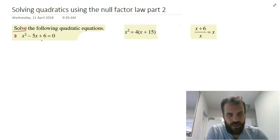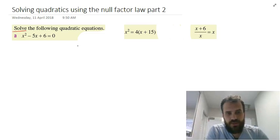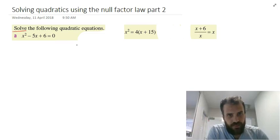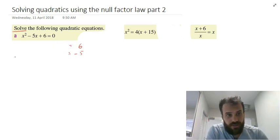It's a quadratic, so it's probably going to have two answers. To factorize this, you can use the AC method. You need two numbers that when multiplied together make 6, and when added together make negative 5. That's going to be negative 2 and negative 3.